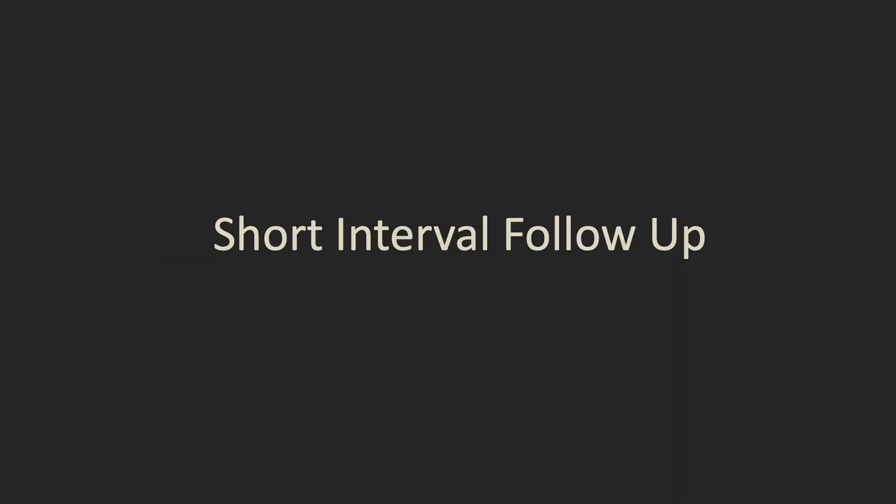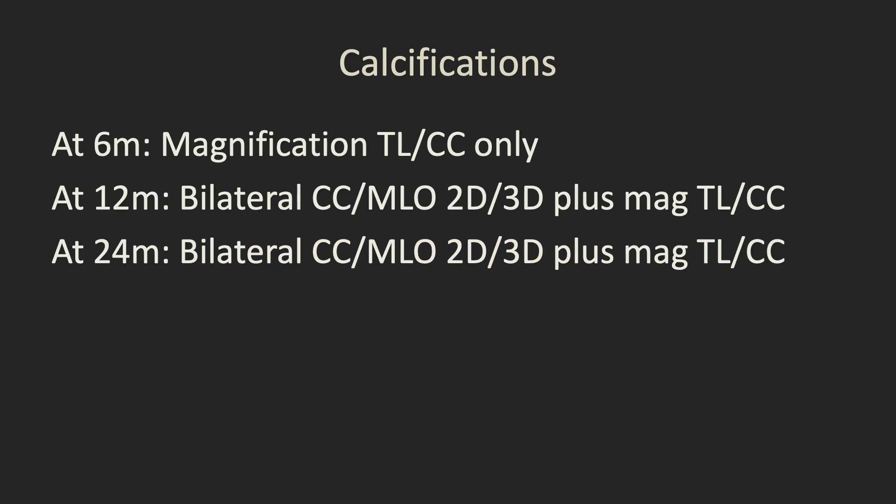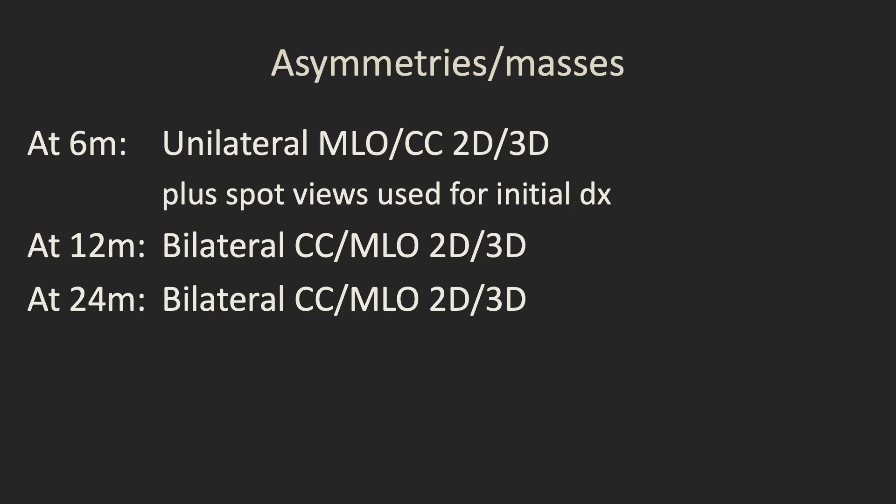Our final category is short interval follow-ups — BI-RADS 3s — split into calcifications and non-calcifications. For calcifications, at the initial 6 months we'll just do magnification views in the true lateral and CC planes. At 12 and 24 months we'll do bilateral CC and MLO, both 2D and 3D, plus magnification views in the true lateral and CC planes. For asymmetries and masses, at 6 months we'll do a unilateral MLO and CC in 2D and 3D, plus spot views used for initial diagnosis. At 12 and 24 months we'll do bilateral CC and MLO in 2D and 3D, and we don't usually repeat the spot images at that time unless there's any concern.